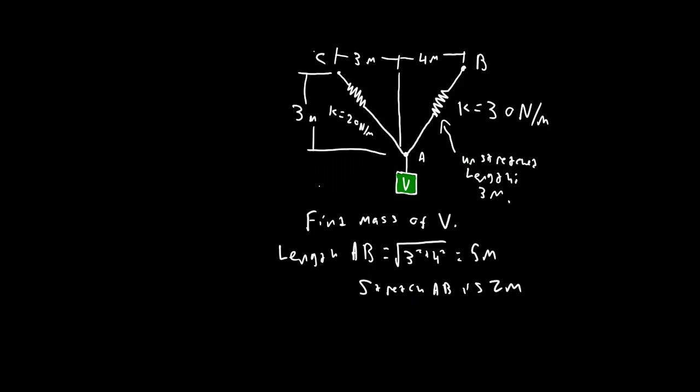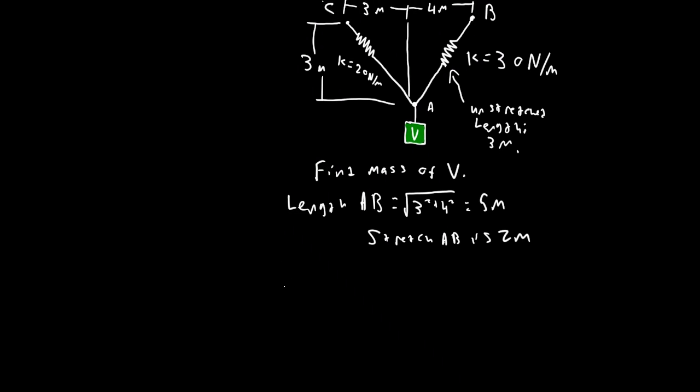Cable AB is stretched 2 meters. So what is the force in that spring system? Call it FAB. FAB equals 30 newtons per meter times the stretch, 2 meters, equals 60 newtons.